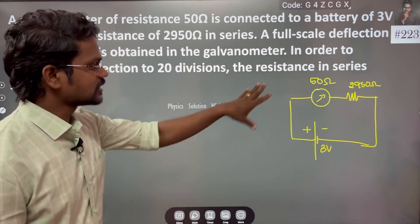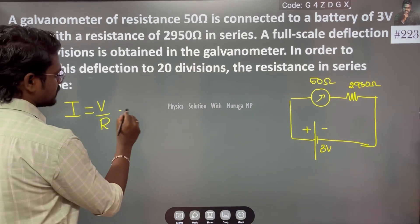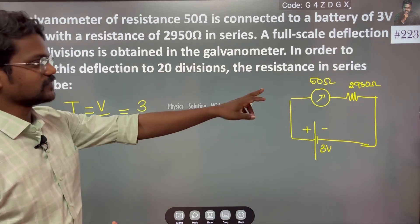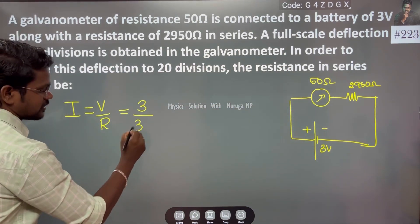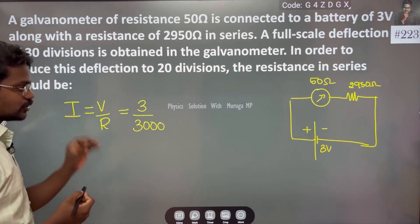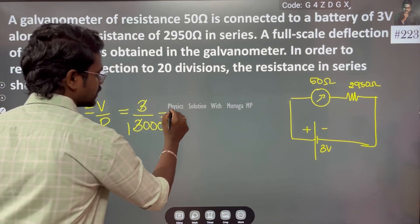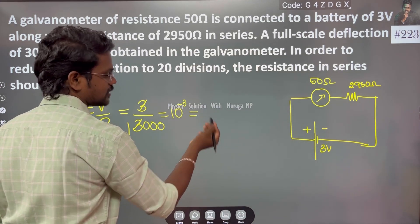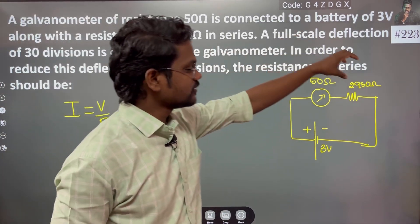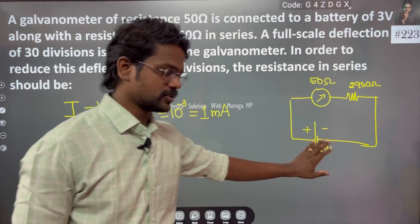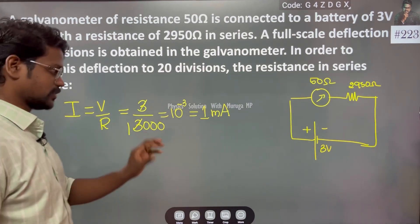Now we calculate the current. Current is simple: I = V by R. V is 3 volts from the source, and R is the total resistance — 2950 plus 50, which is 3000 ohm. So the current is 3 divided by 3000, which gives 1 milliampere. So we have 50 ohm galvanometer, 2950 ohm series resistance, and 3 volt supply giving full scale deflection of 30 divisions at 1 milliampere.